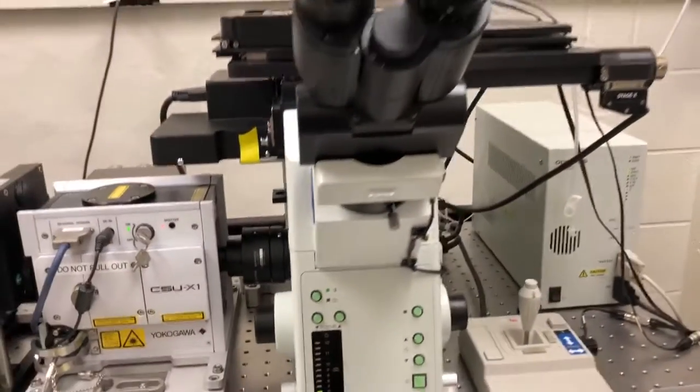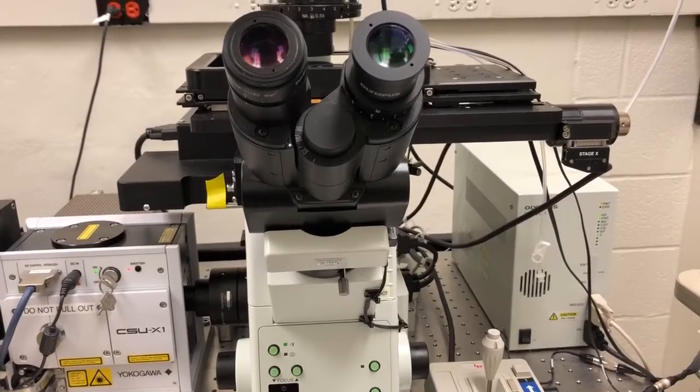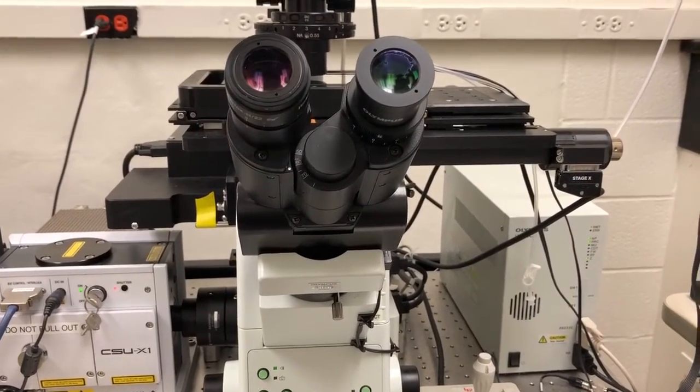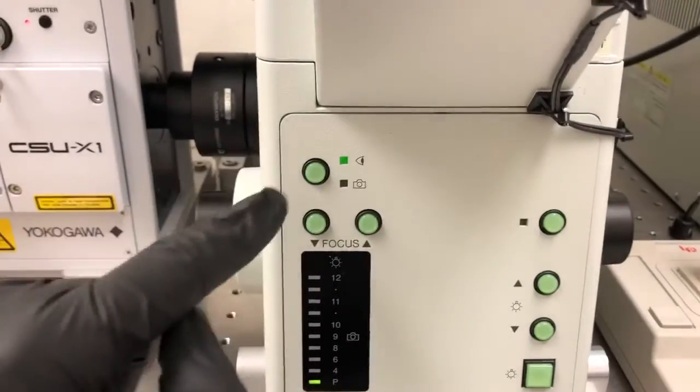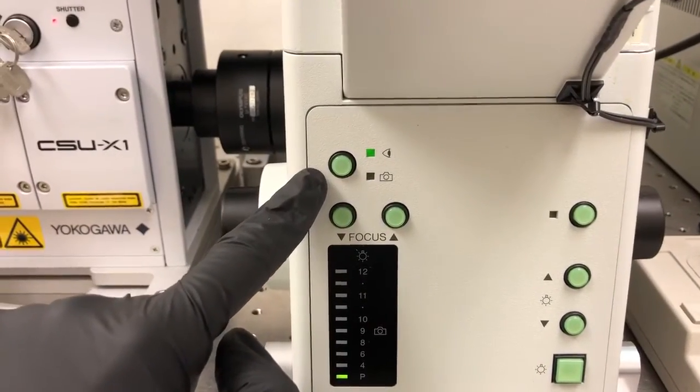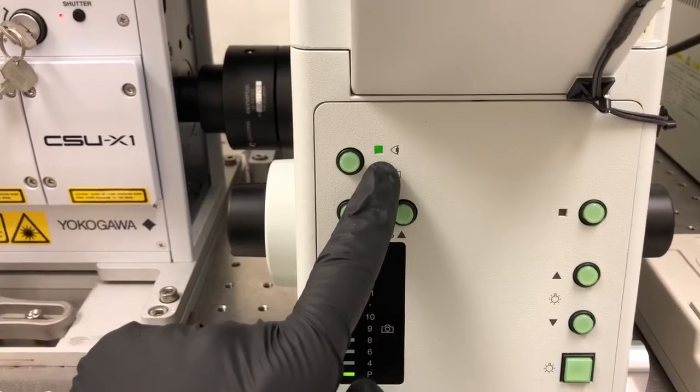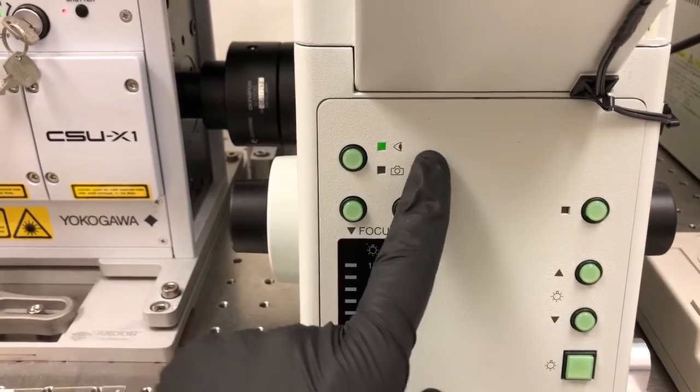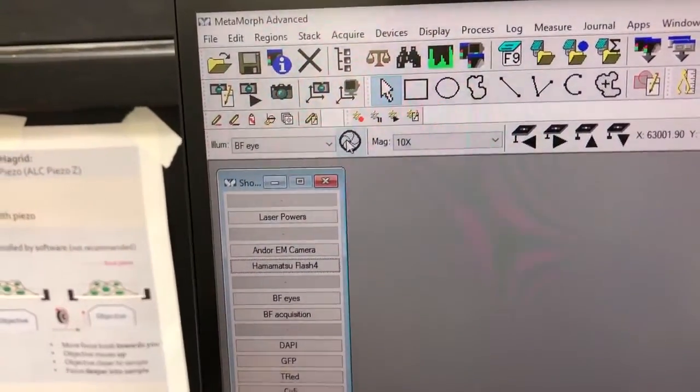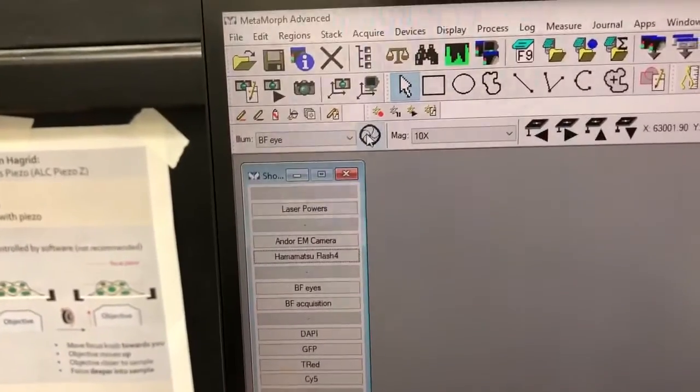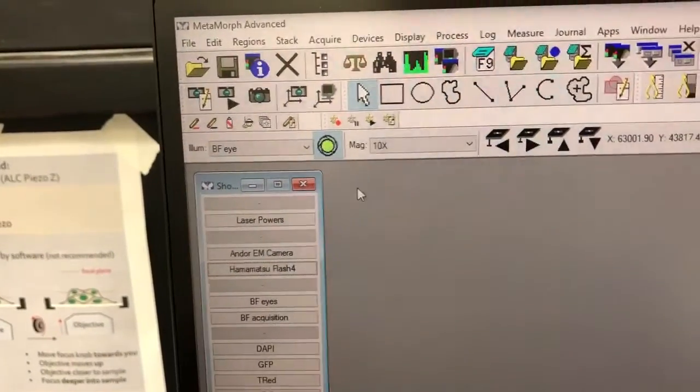The next things that we need to do are to ensure that the light goes to the eyepieces and that it can actually reach them. So to ensure that the light goes to the eyepieces, we have to take a look at these lights and make sure that the one next to the eye symbol is turned on. And so if we picked brightfield eye, that will automatically be set correctly. Let me actually turn this on again. I mistakenly turned it off.